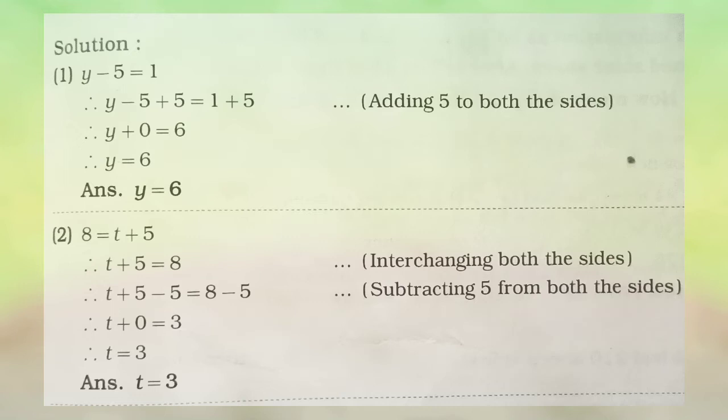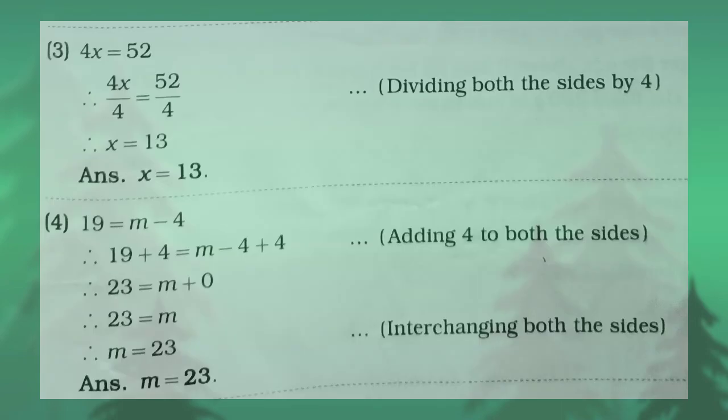The next question is 4x is equal to 52. Here, 4 is in multiplication form, so we will do the opposite operation, that is division. So 4x divided by 4 is equal to 52 divided by 4. We cancel the 4s, x is remaining, and 52 divided by 4 gives 13. So x is equal to 13.